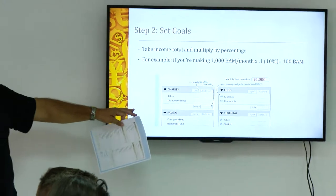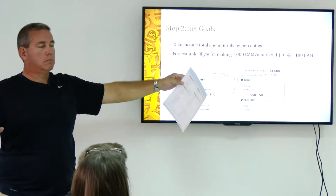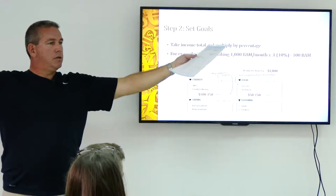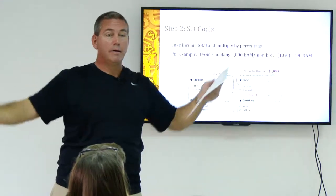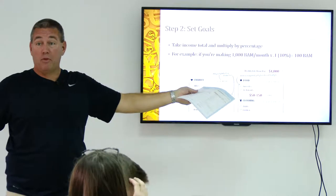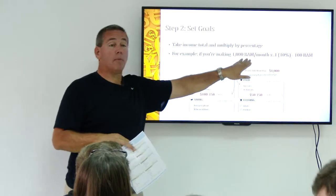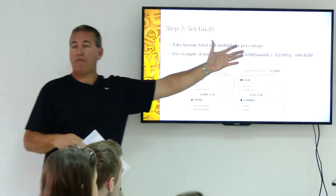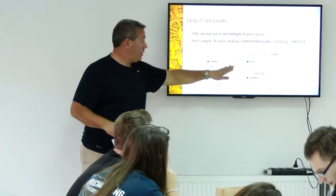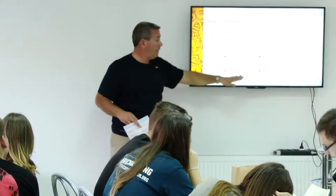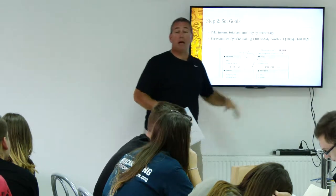It might look like this. If you're making 1,000, and you can do math — take that percentage. If you're making 1,000, 10% of that is 100. So if it's 5% for food, then put that number in there for your goal.